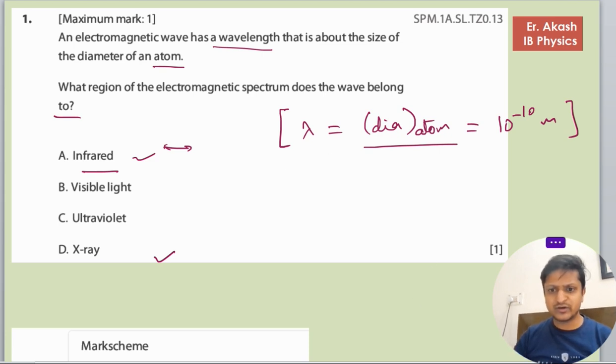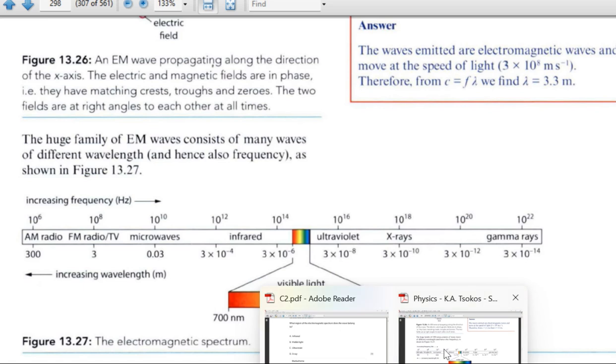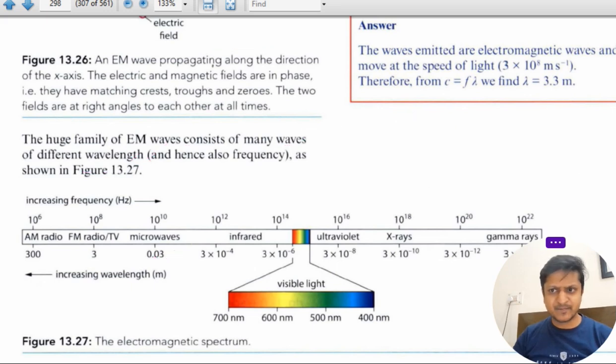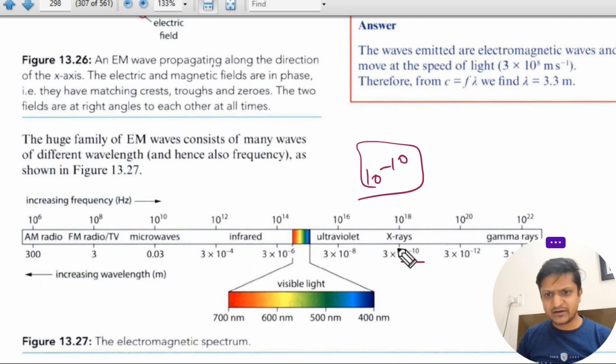So I'll just show you the data booklet. You can see here the 10 raised to power minus 10, we are concerned about. So 10 raised to power minus 10 wavelength is this, so this is of x-rays.